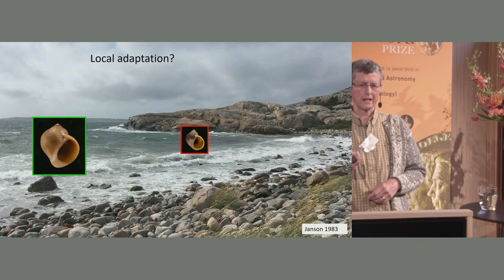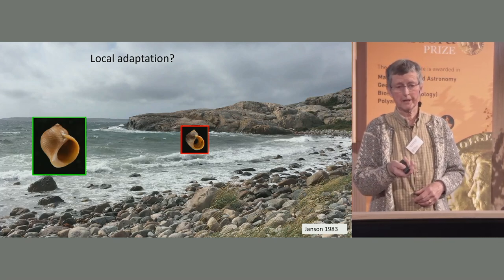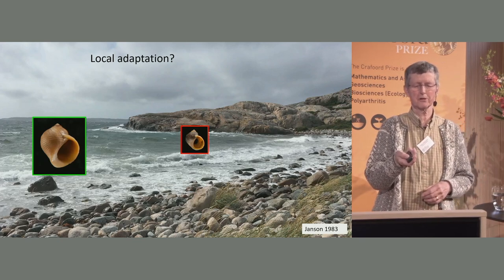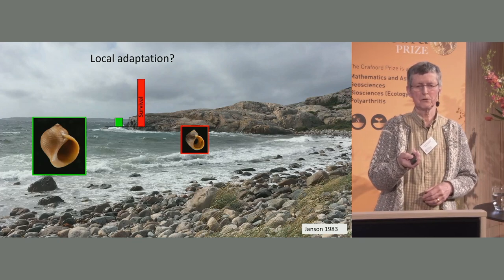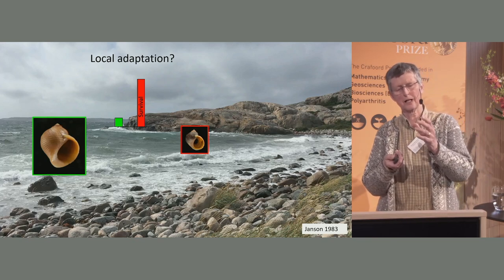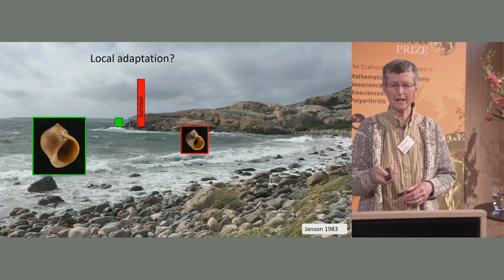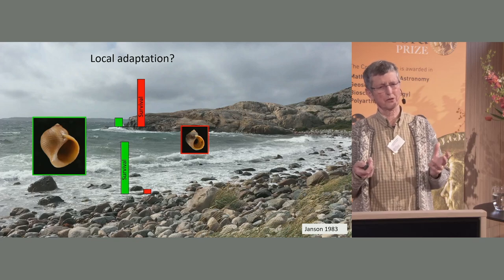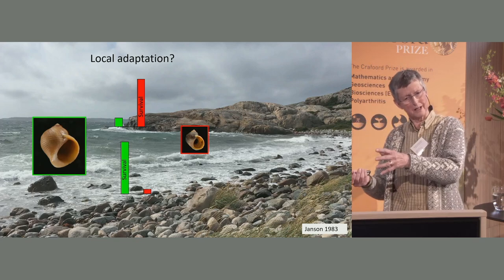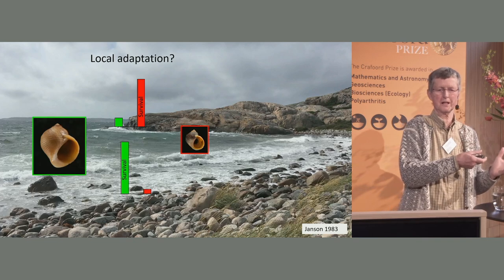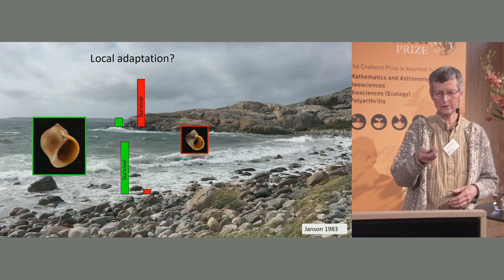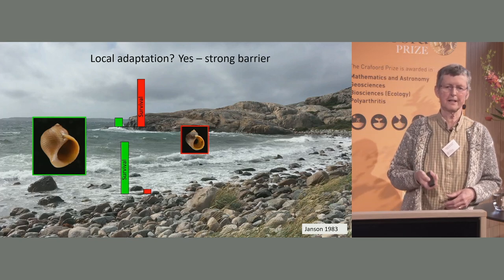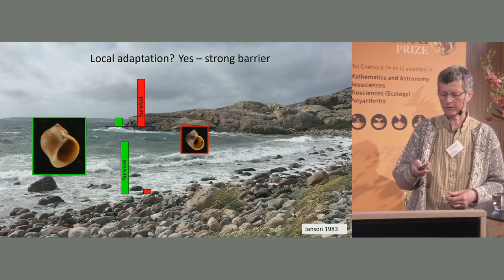As I found out long ago as a young student through transplant experiments: if you move snails from their own habitat to the opposite habitat, survival goes down a lot. The crab ecotype has only about 10% survival rate compared to the wave ecotype in the wave environment, and the opposite in the other direction. This is of course what you expect looking at all their adaptations. So local adaptation is creating very strong barriers to gene flow.